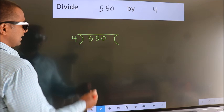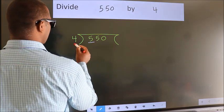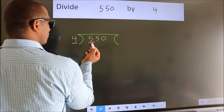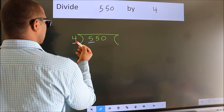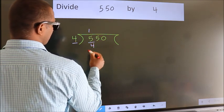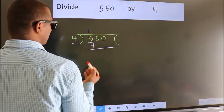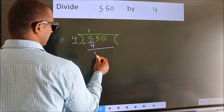Next, here we have 5, here 4. A number close to 5 in the 4 table is 4 once, which is 4. Now we should subtract. We get 1.